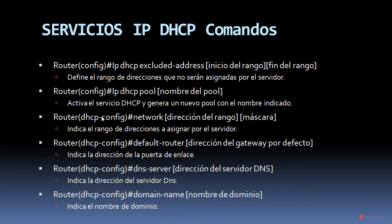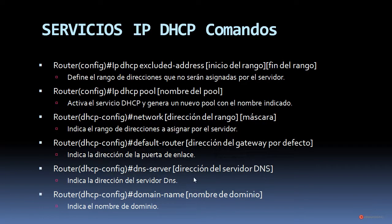Luego, ya dentro del modo de configuración DHCP, tenemos el comando network con la dirección del rango y la máscara, que indica el rango de direcciones a asignar por el servidor. Luego tenemos el comando default-router con la dirección del router por defecto, que indica la dirección de la puerta de enlace que asignará el servidor DHCP al cliente si este la solicita. También el comando dns-server con la dirección del servidor DNS, y el comando domain-name con el nombre de dominio.